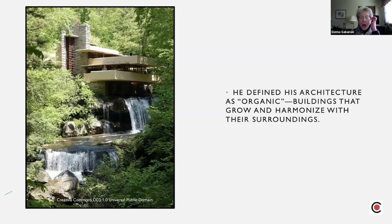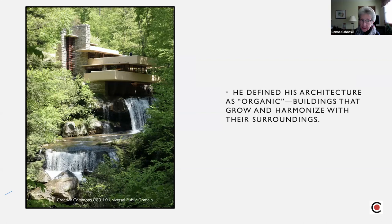Wright defined his architecture as organic — buildings that grow and harmonize with their surroundings. Here is a picture of Fallingwater, which came much later in 1935, just to entice you to look ahead because there is lots more of Wright's work to take a look at. I'm going to stop sharing and turn it over to Joan.